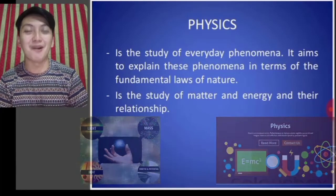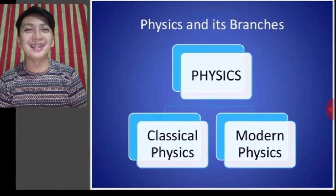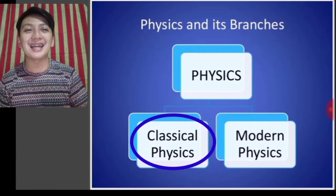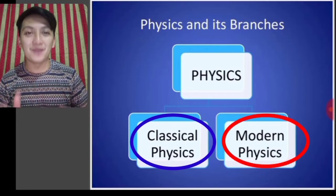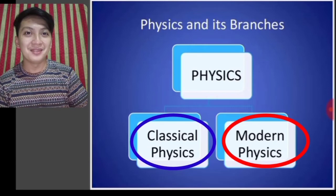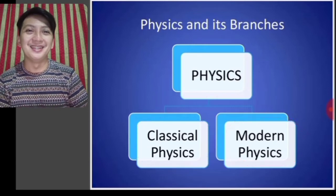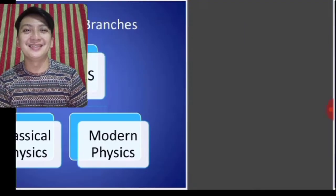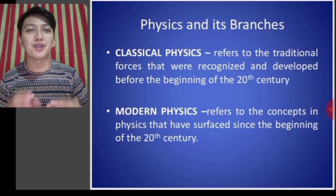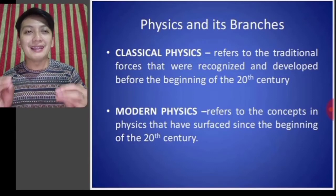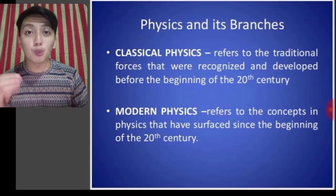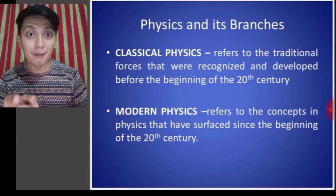Always remember that physics and its branches are divided into two: we have classical physics and modern physics. Classical physics refers to the traditional forces that were recognized and developed before the beginning of the 20th century.